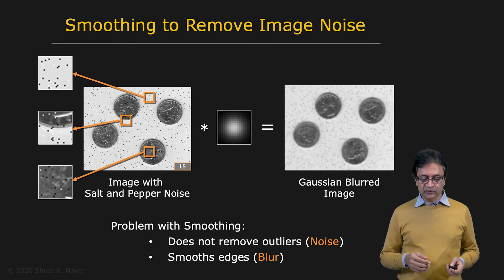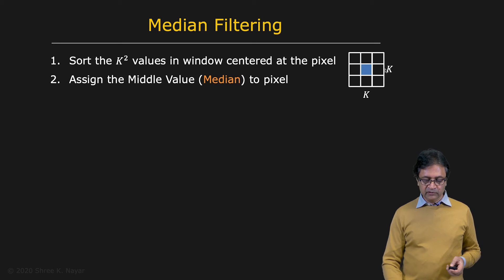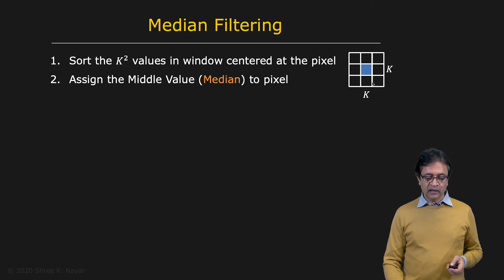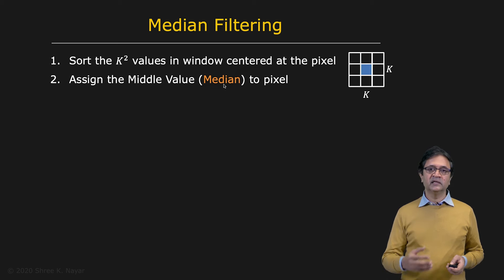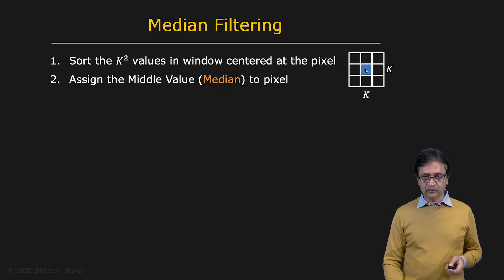So now we're going to take a different approach, called median filtering. It's more of an algorithmic approach. You take a pixel that you want to find the value for, and you look at its neighborhood, let's say k by k. You take all of these k-squared intensity values in the image, and you sort them. After you sort them, you find the middle value — that is the median of that set of intensity values.